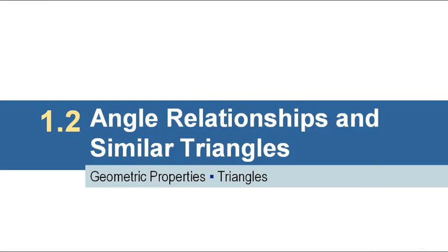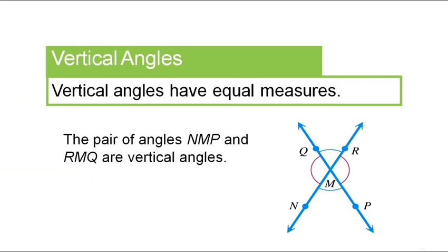Hello again, everybody. Here we are in section 1.2 of the trig book. We're going to be looking mostly at similar triangles in this lesson. But first, let's talk about vertical angles.